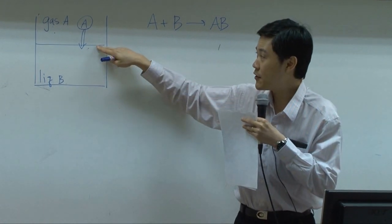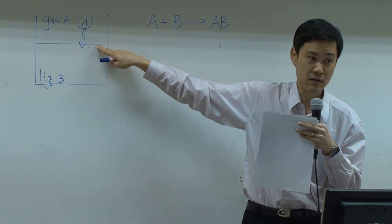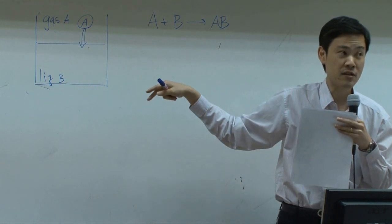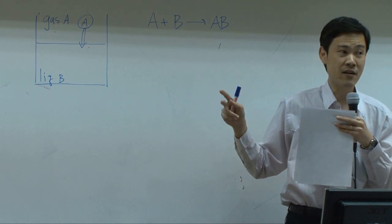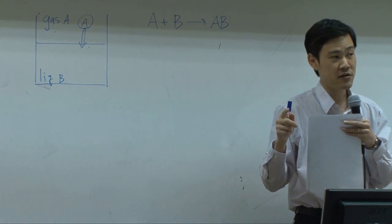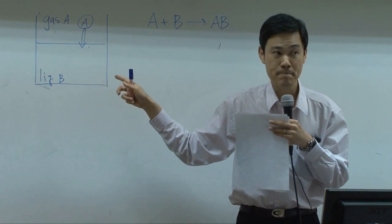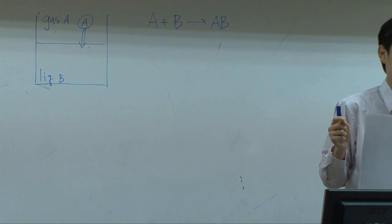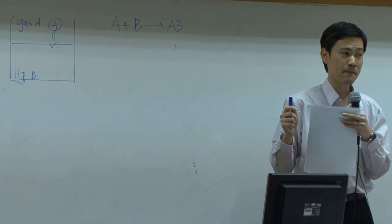In our case, the liquid is considered as the system. Therefore, there will be a concentration difference of A — near the surface the concentration of A is greatest, and further down A is consumed along the way. So there will be a concentration gradient along the vertical direction. Wherever you have a difference in concentration, that is where you consider as the system.